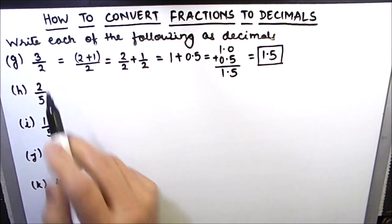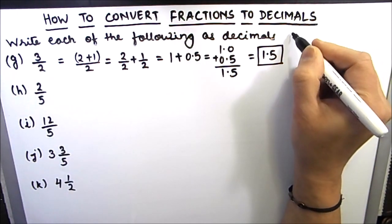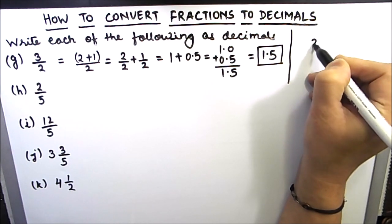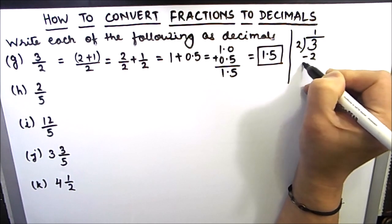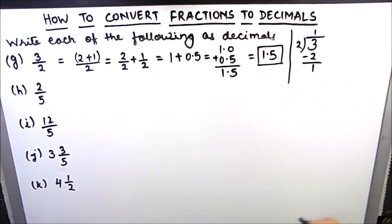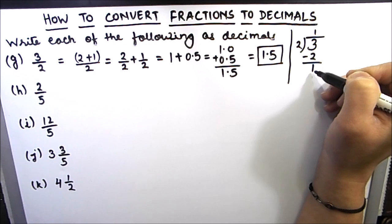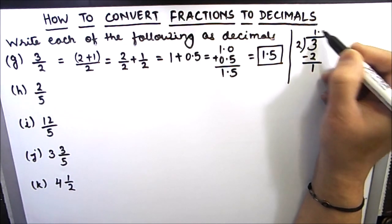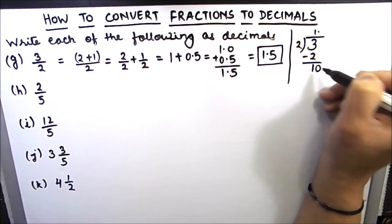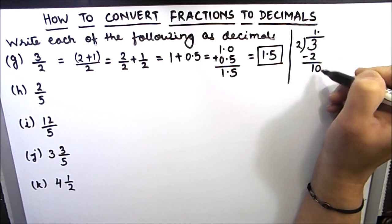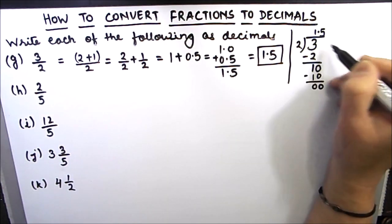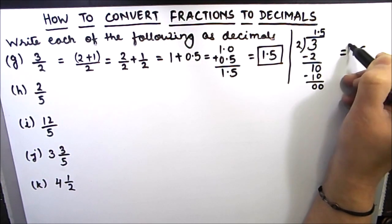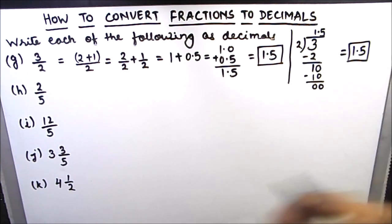Or we can divide the two numbers directly — this is the second method. We will divide 3 by 2. 2 times 1 is 2, and we are left with 1 as remainder. Now 1 cannot be divided by 2. We will put a decimal point and drop a 0. Now 10 can be easily divided by 2. So 2 times 5 is 10. So the answer is 1.5. You can do either method — both are correct.